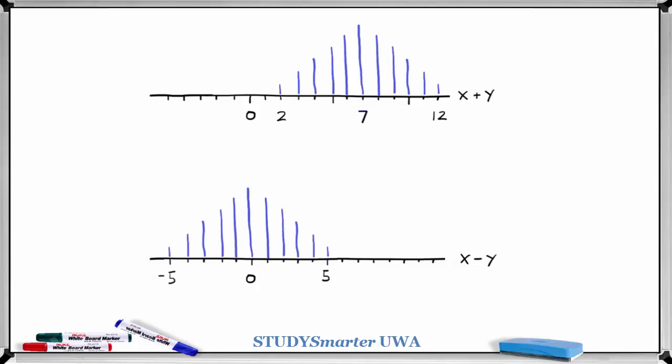As you can see, x plus y tends to produce larger values of the random variable than x minus y. However, variance is defined as measuring the spread of a distribution either side of its middle.